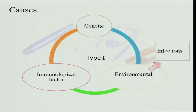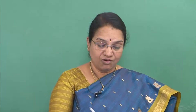The causes of type 1 diabetes may be genetic — if there is a family history of diabetes it may be genetic — or it may be because of any immunological factor, or environmental factors such as infections.